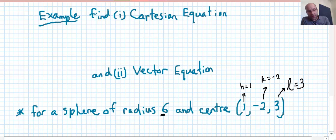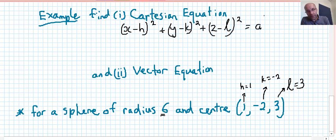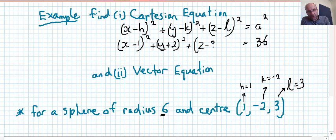With a radius of 6, we've got x minus h, all squared, plus y minus k, all squared, plus z minus l, all squared, equals a squared, with a being the radius. Well, the radius is 6, so a squared is 36, and we have x minus 1, all squared. Now, y minus negative 2 is y plus 2, so it's y plus 2, all squared, plus z minus 3, all squared. So that's our Cartesian equation.